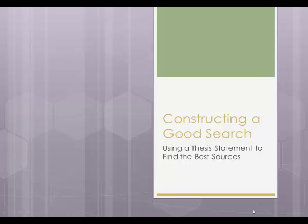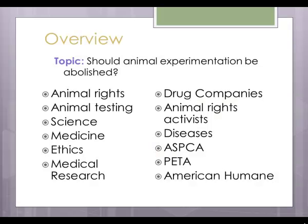Constructing a good search using a thesis statement to find the best sources. In the topic to thesis presentation from the last module, we saw how you can use keywords in order to conduct background research on a topic. For our topic — should animal experimentation be abolished — we used some general keywords and some specific keywords associated with the topic.